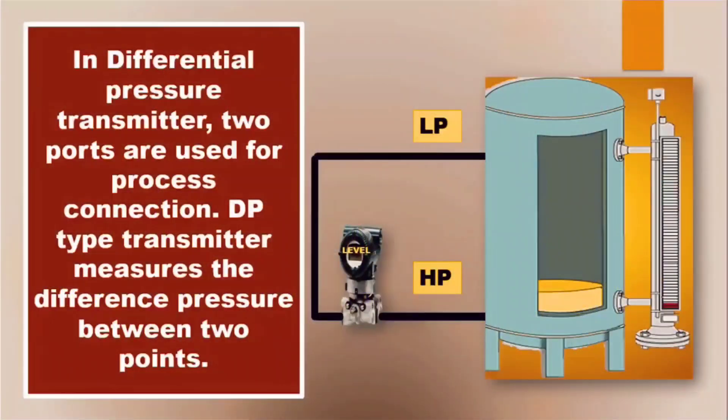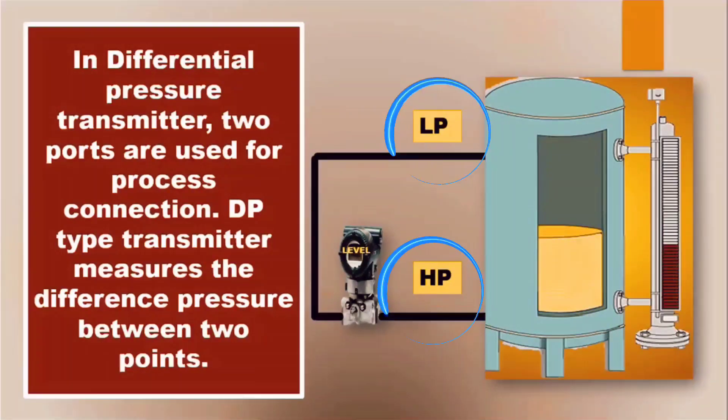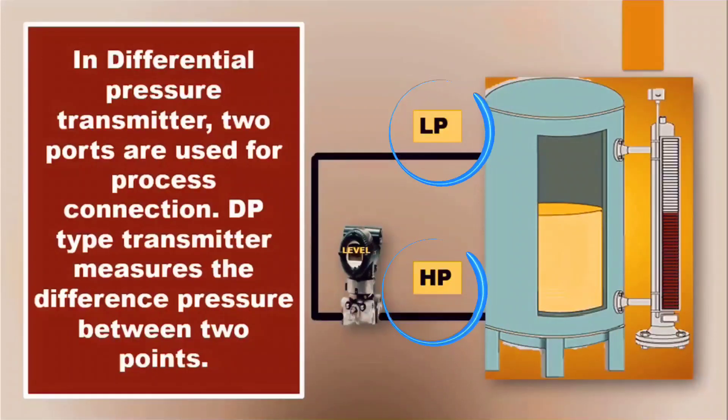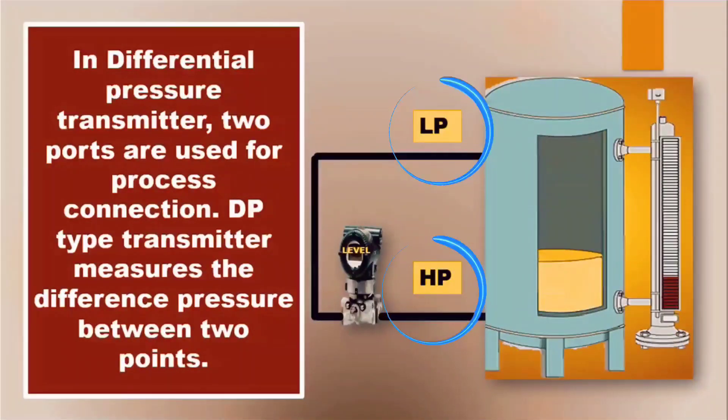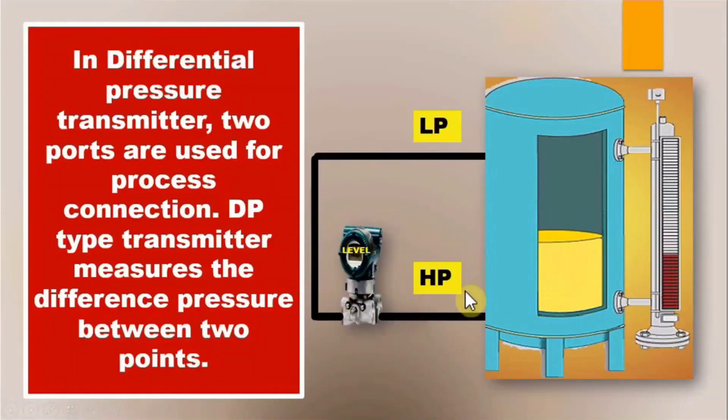For closed tank level measurement, two ports are used for connections in DP-type transmitter. DP-type transmitters measure the pressure difference between these two points. Therefore, these transmitters are called Differential Pressure Transmitter. For level measurement, this transmitter has one high pressure port, also called HP port, and there is one low pressure port, which is also called LP port.